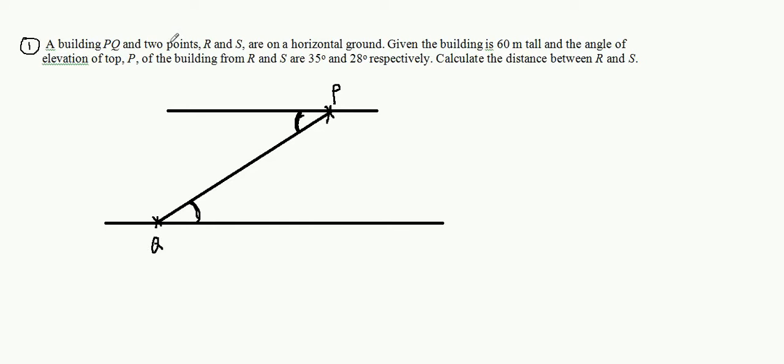P, Q and two points R and S are on the horizontal ground. Let me draw the diagram first. The building is 16 meter tall. This will be the diagram. This is 16 meter, this is point P and Q. So which point here is R, which point is S? Let's look at the question first.